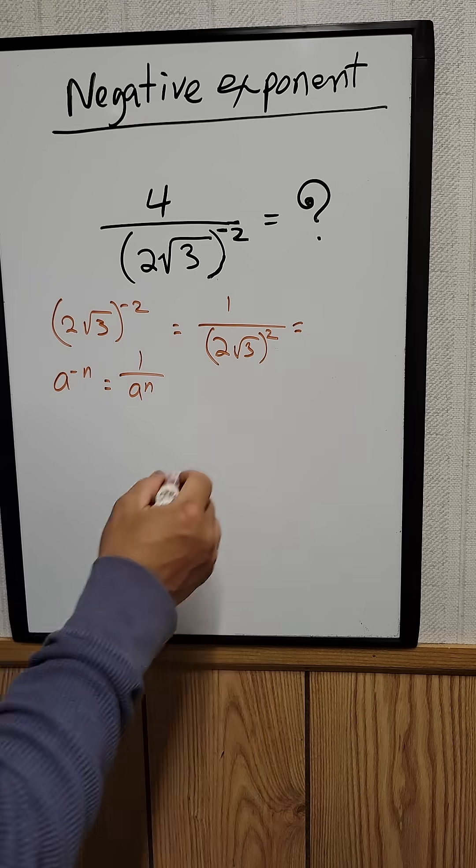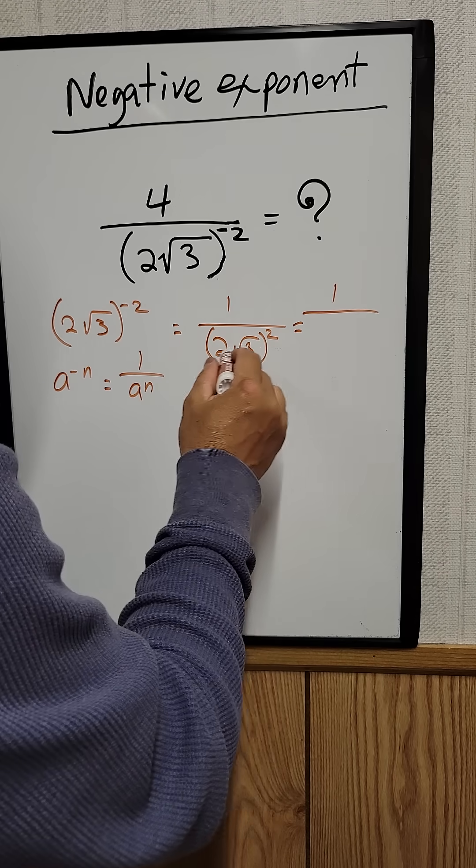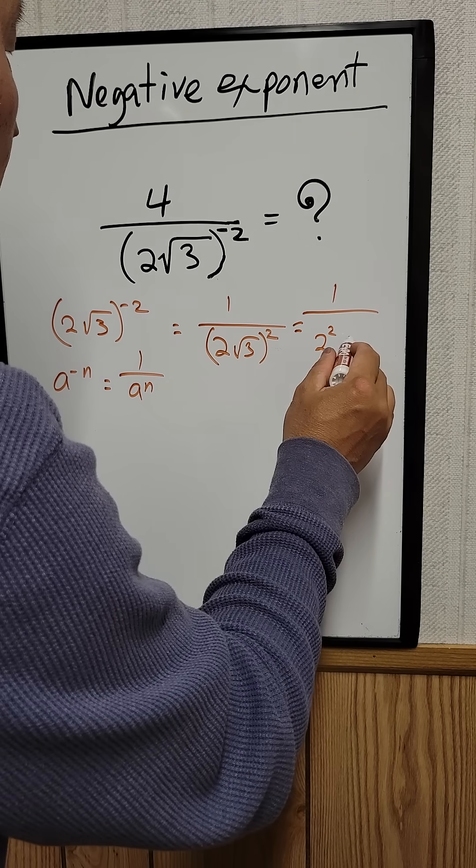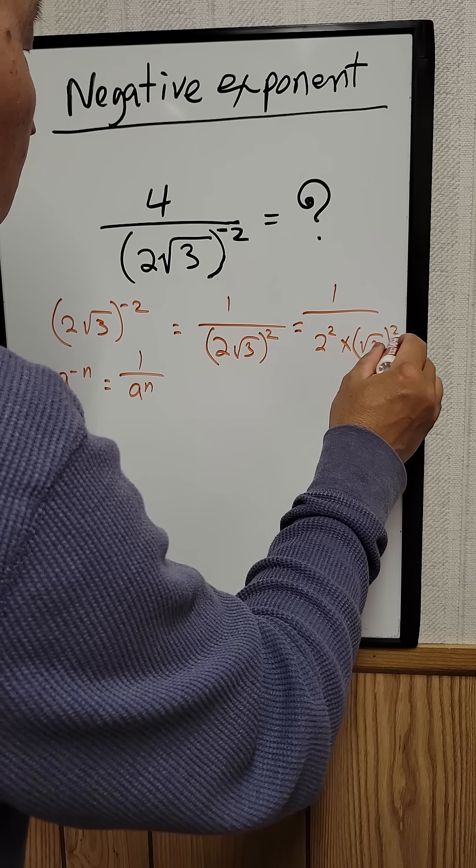And then we can simplify this. We can say that 1 over 2 squared times the square root of 3 squared.